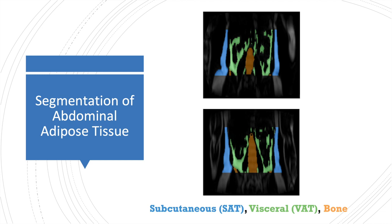However, accurate quantification is challenging due to complex visceral and subcutaneous adipose tissue structures, large anatomical differences across subjects, and properties of Dixon images. Those limitations have impeded the widespread implementation of fat segmentation techniques in large population studies.